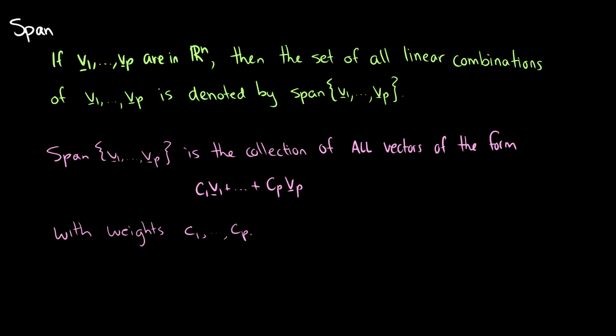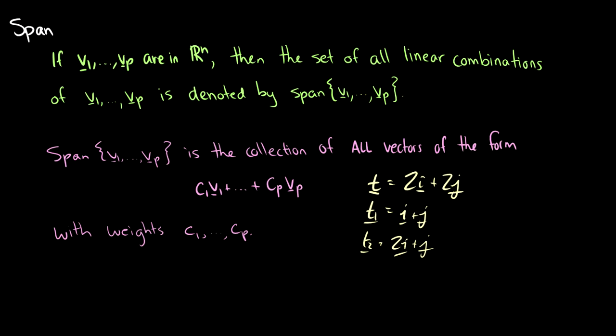In the previous video we looked at one example. We said that t was equal to 2 times i plus 2 times j. Well, if we have vectors i and j, then the span also includes a new vector t1 which is just i plus j. It includes t2 which is 2i plus j, and it includes all possible combinations of i and j.